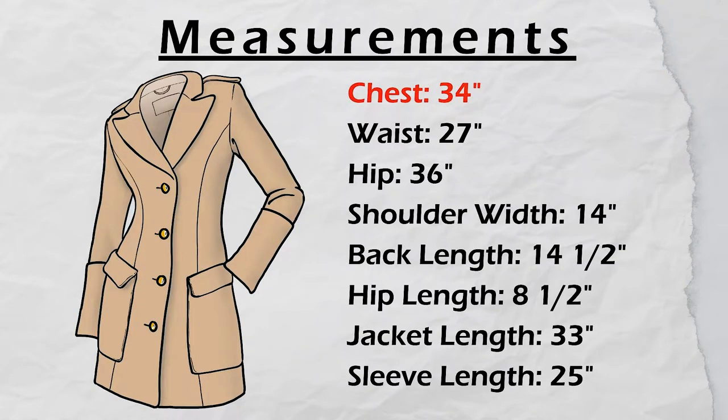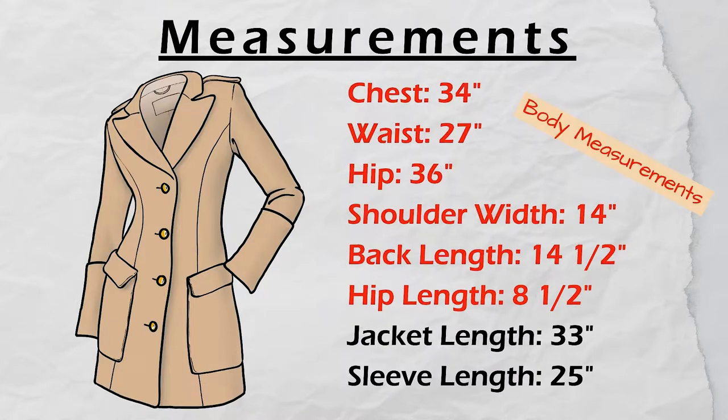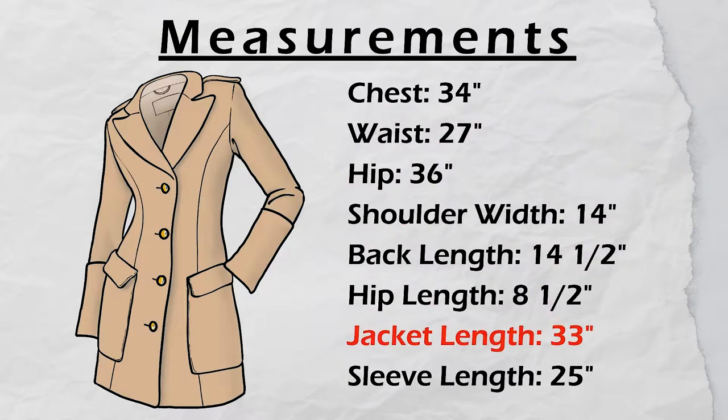I'm going to take my mannequin's measurement as body measurement. So you need chest, waist, and hip circumference, shoulder width, back length, and hip length. These are body measurements. And you decide the jacket length and sleeve length you want.